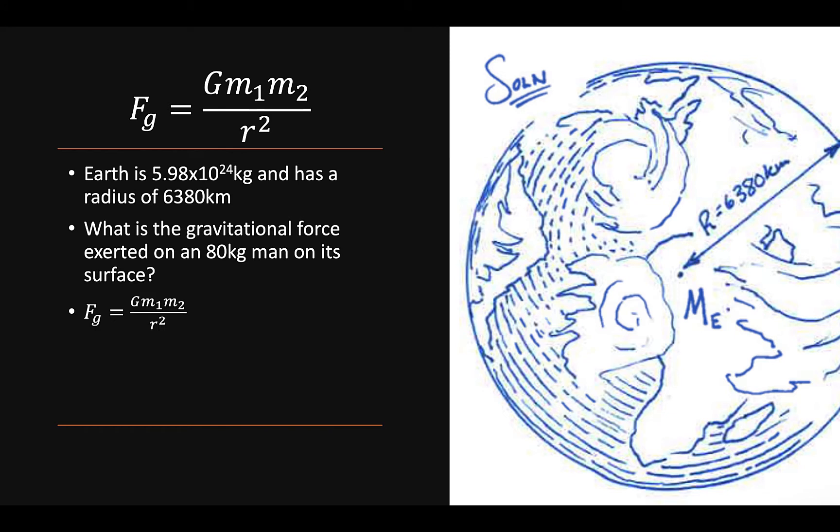Using F sub g equals G m1 m2 over r squared, and knowing that Earth is roughly 5.98 times 10 to 24 kilograms in mass and has a radius of 6,380 kilometers or 6,380,000 meters, we can plug it into our formula and we can see that F sub g equals 784 newtons.